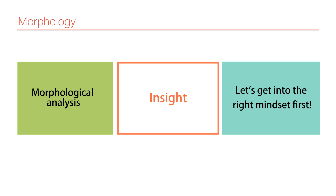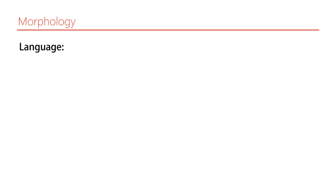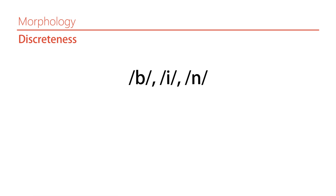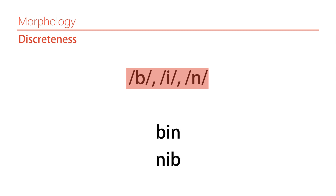There are certain things you need to know about language that give you morphological insight before you engage in the analysis. One property of language relevant to both morphology and phonology is discreteness. For example, in phonology, consider three sounds — they can be combined in different ways. The fact that they can be rearranged shows there are components to these words: sounds, phonemes. You can move these components around in different orders, and that order is important.